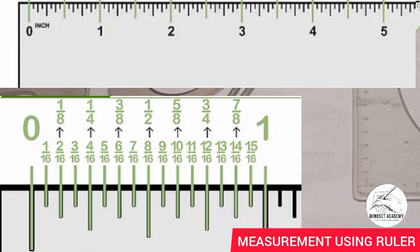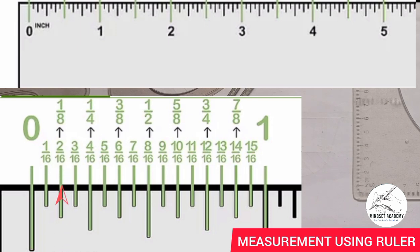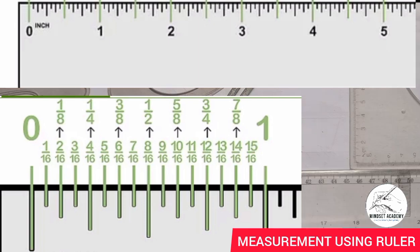In between zero and one inch, the middle line is half an inch, which is 1 over 2 — and it makes sense because that halfway mark is 8 over 16, and 8 over 16 simplifies to 1 over 2. In between zero and half an inch, we have one quarter — 1 over 4. And in between zero and 1 over 4, we have 1 over 8. Also, one inch is equivalent to 25.4 millimeters.